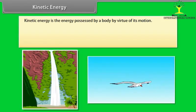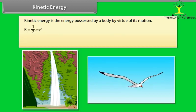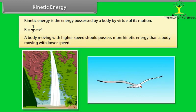Kinetic energy. Kinetic energy is the energy possessed by a body by virtue of its motion. Kinetic energy equals half mv square. Running water and flying bird are few examples of bodies possessing kinetic energy. It is logical that a body moving with a higher speed should possess more kinetic energy than a body moving with lower speed.